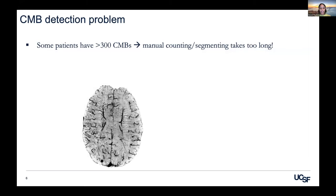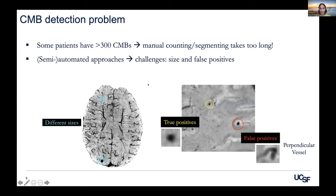Assuming you have 7T SWI data to detect microbleeds from, traditionally people would manually count and segment them, which can take very long. Some patients — like those treated with radiation, the population we tend to look at — have upward of 300 microbleeds, making it almost an impossible task. This is where semi-automated approaches come in. Challenges include detecting microbleeds of consistent size and minimizing false positive detections.